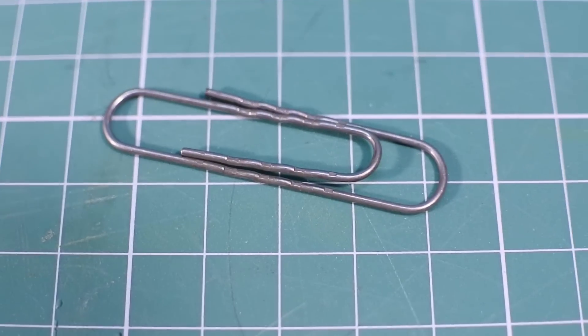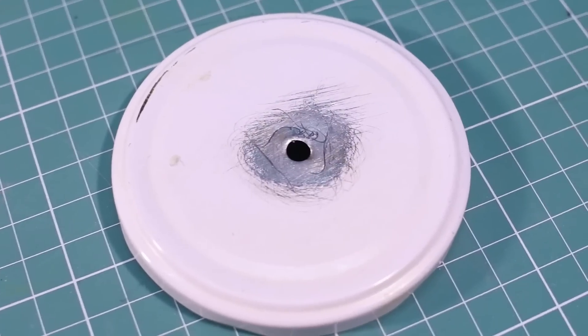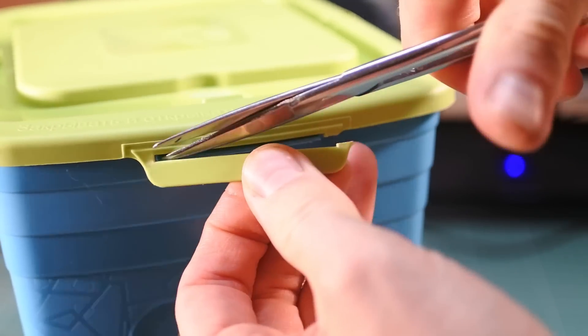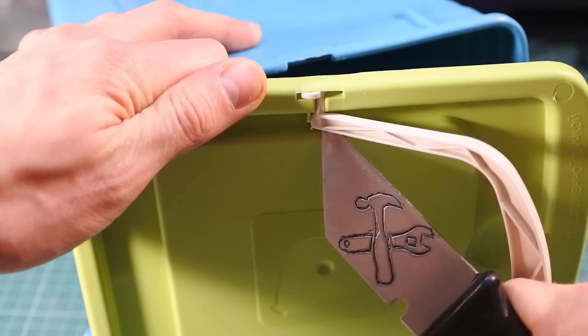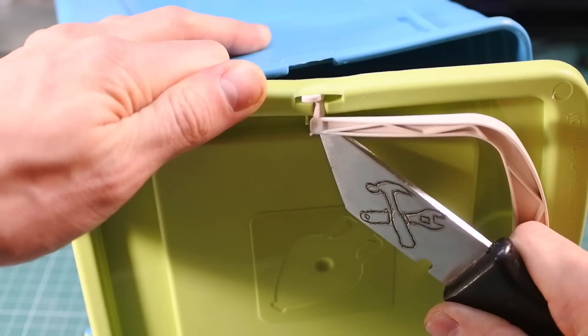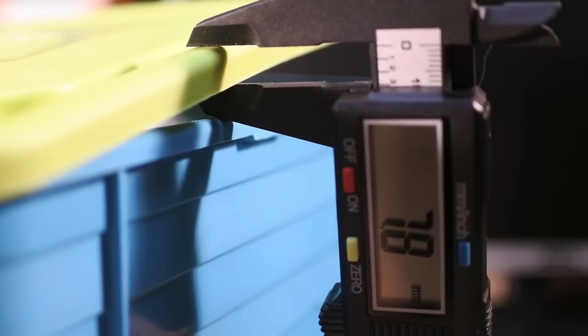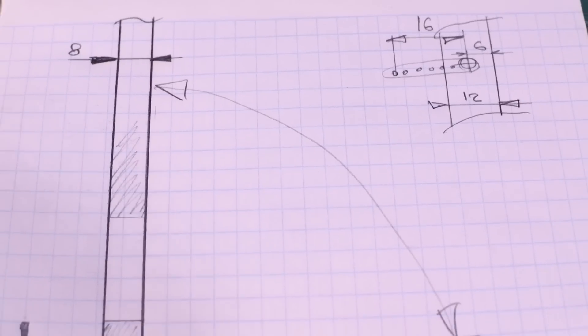The connection rod I will make from a paper clip. That's almost all we need. I get rid of all useless plastic parts from the trash can. I decided to design the cap opening mechanism, so I'm measuring all parts of the mechanism and sketching it on paper in real scale.